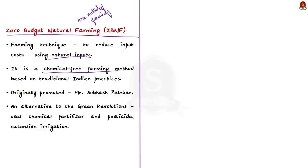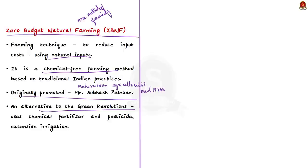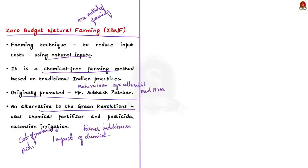Zero budget natural farming was originally promoted by a Maharashtrian agriculturalist, Mr. Subhash Palekar. He created this method in the mid-1990s as an alternative to the green revolution, which insisted on chemical fertilizers and pesticide-based approaches as well as extensive irrigation. According to him, the rising expenses of external inputs was a leading source of farmers' indebtedness and suicide, and the impact of chemicals on environment and long-term fertility was devastating.